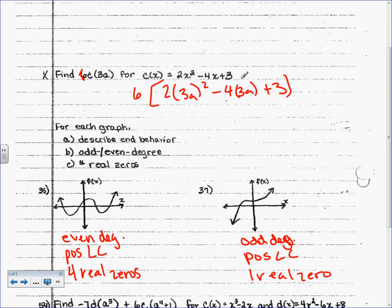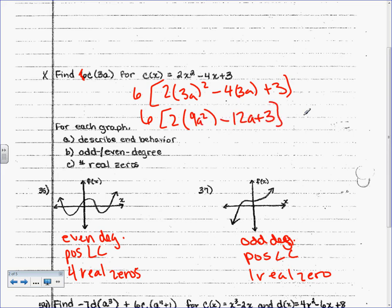Order of operations says PEMDAS, right? Grouping symbols come first — these are grouping symbols, we have to start in here. We cannot distribute the 6 first — that's not how it works. So once you're inside the grouping symbols, you do PEMDAS again: exponents, then multiplication, division, and so on. The 6 is still here. What is 3A squared? 9A squared minus 12A plus 3. So 6 times 18A squared minus 12A plus 3.